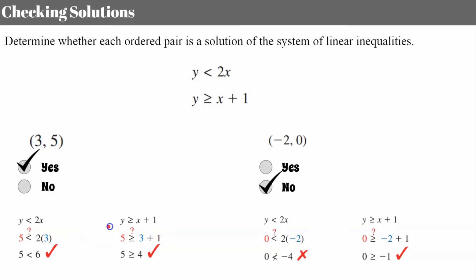Go to the second inequality. Replace y with five and x with three — five is greater than or equal to four. It checks. Therefore, this ordered pair is a solution to the system.